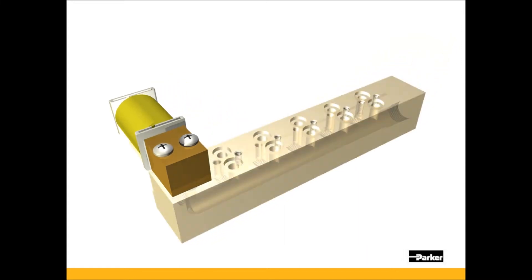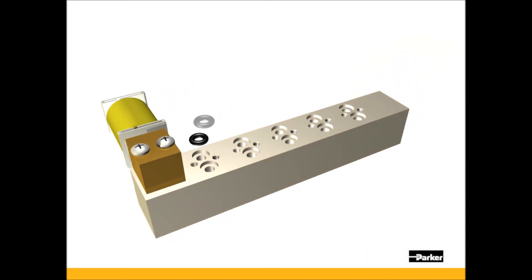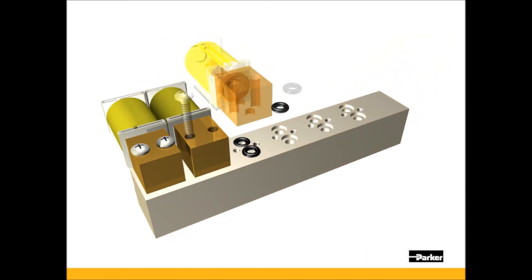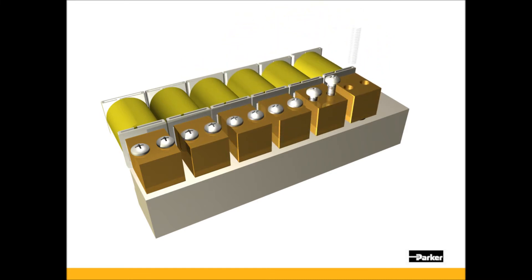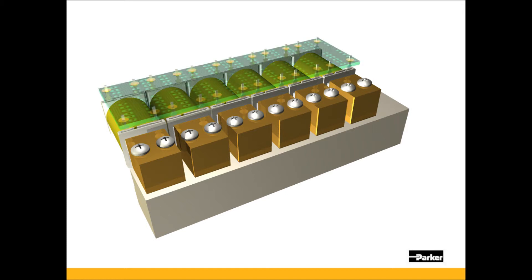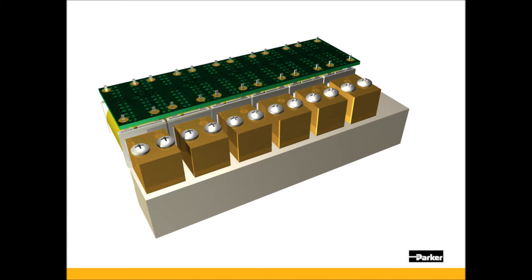When installing multiple Series 11 valves onto a manifold, two screws are required to mount each valve. Once the valves have been mechanically fastened to the manifold, a common electrical connection can be made using the 4PC pin option or by combining leads and headers.